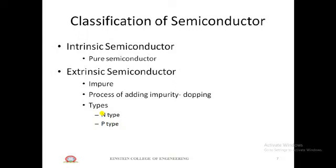Extrinsic semiconductors have two types: N-type and P-type. N-type semiconductor is formed by doping pentavalent impurity, which has five outermost electrons. Atoms like arsenic, antimony, and phosphorus are added to pure silicon or germanium, resulting in more free electrons. So N-type material has electrons as majority carriers and holes as minority carriers. P-type material is formed by doping trivalent impurities such as aluminum and boron, which accept electrons and create holes.